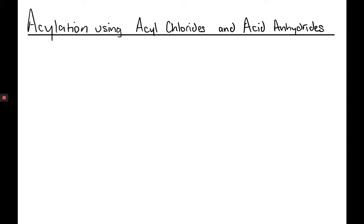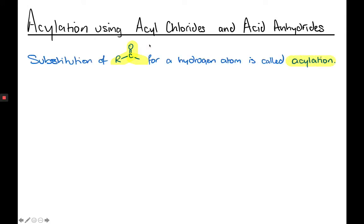With our title here, we've got three terms that we haven't met before. We've got acylation, which is the name of the topic, and we've got acyl chlorides and acid anhydrides — these are the two derivatives we're going to meet. An acyl group is a carbonyl group with an R attached to it and another group or atom attached. The RCO is the acyl group. When we're talking about acylation, we're talking about substituting a hydrogen atom with that acyl group, that RCO.